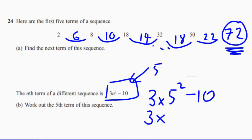3 times - 5 squared is 25, and then take away 10 from the answer.